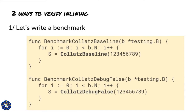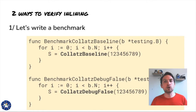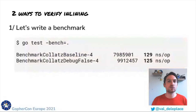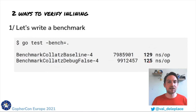The benchmarks don't provide any formal proof about inlining, but they still provide useful clues. Here we run the benchmark and see that the results are roughly the same, which means that the compile-time optimizations successfully kicked in. My debugf function is effectively a zero-cost abstraction.